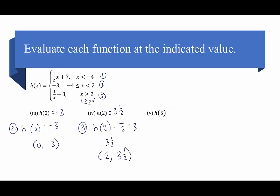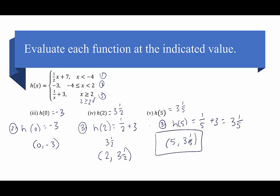Finally, h of 5: 5 is greater than or equal to 2, so it goes into piece 3. h of 5 equals 1 over 5 plus 3, which gives 3 and one-fifth. So h of 5 equals 3 and one-fifth, or the ordered pair 5 comma 3 and one-fifth. This has been an introduction to piecewise functions. Thank you for stopping by.